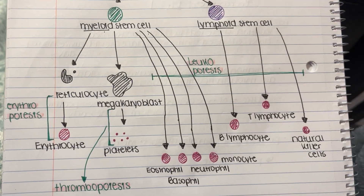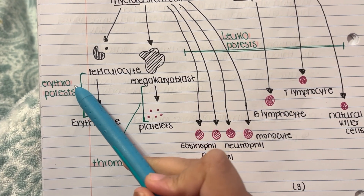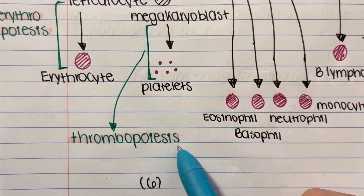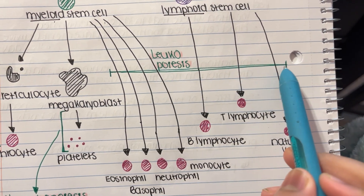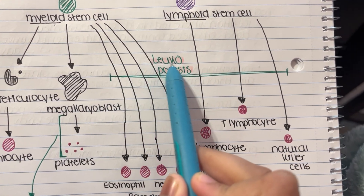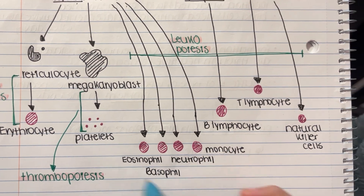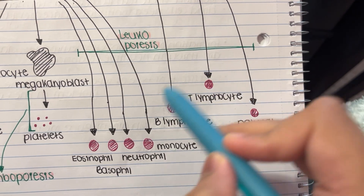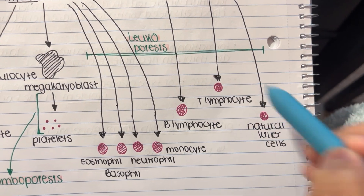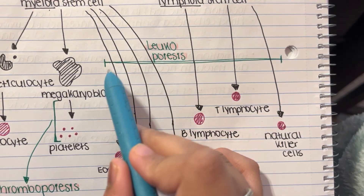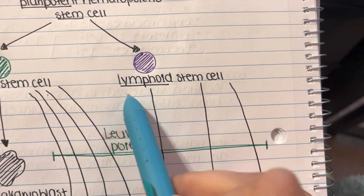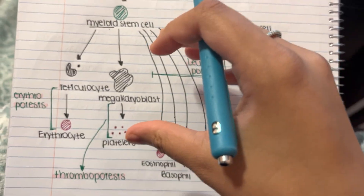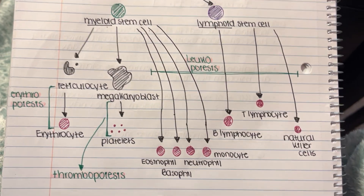Just something to point out: erythrocytes are created through erythropoiesis, platelets are made through thrombopoiesis, and all the white blood cells — both from myeloid and lymphoid — are created through leukopoiesis. Lymphoid solely makes white blood cells, while myeloid is mixed because, like the math major, it has more avenues.